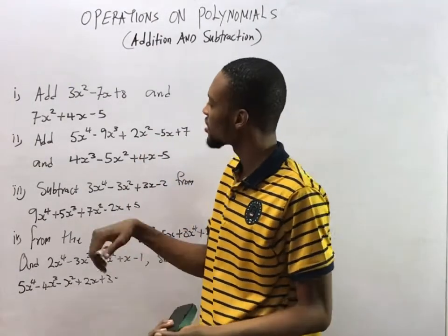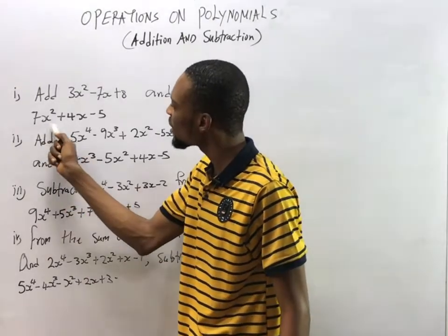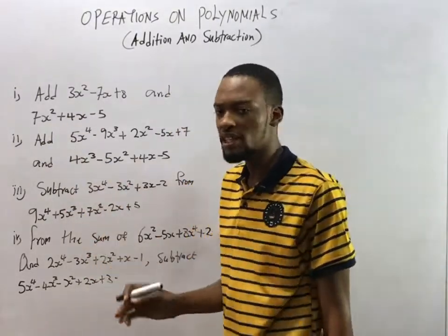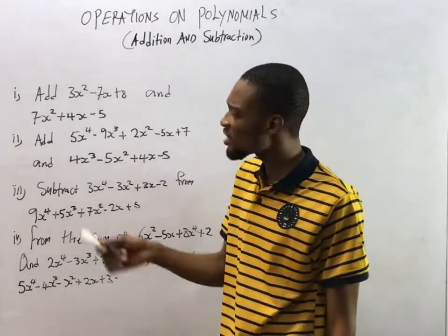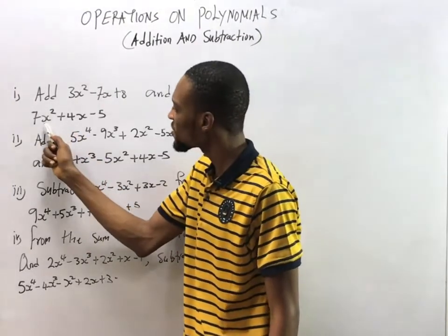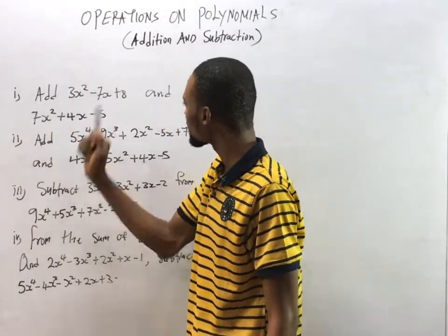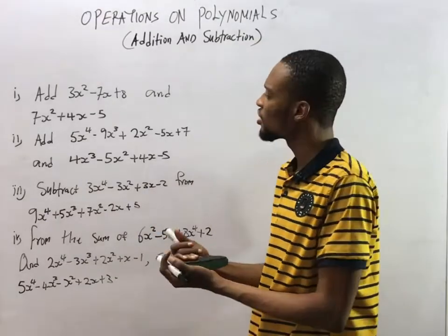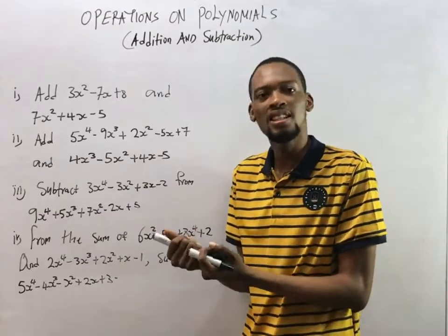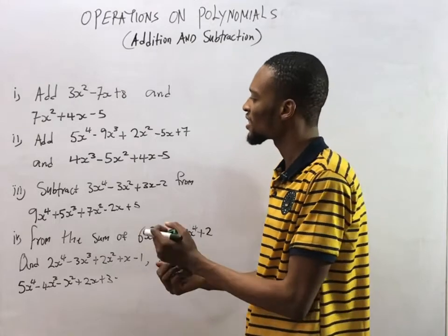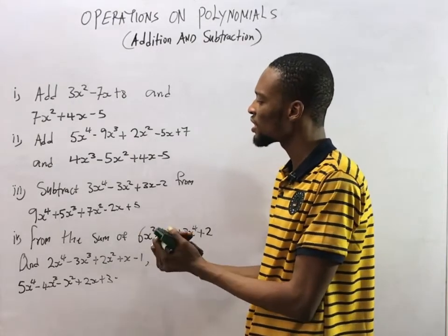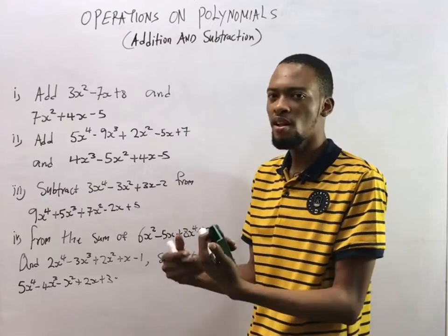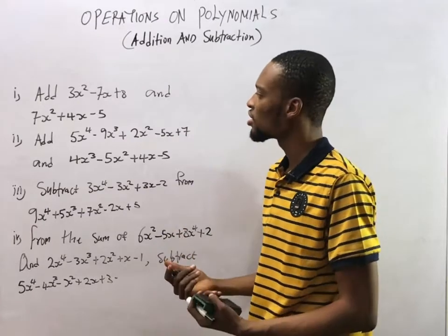For example, 7s² + 3s² is valid because they share the same degree. However, you cannot combine 7s² + 7s because they are not of the same degree. So when adding polynomials, add terms with the same degree; when subtracting, subtract terms with the same degree.